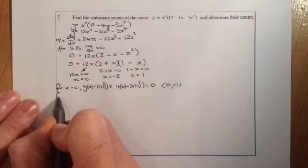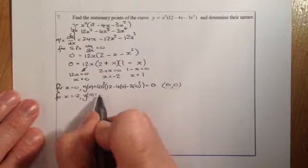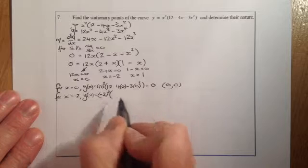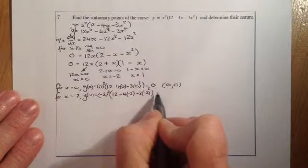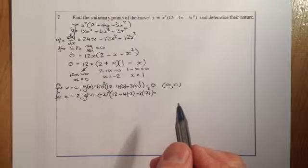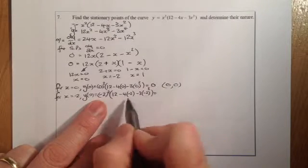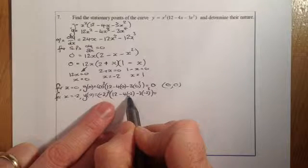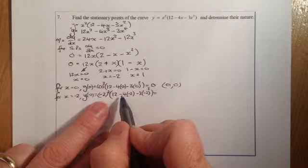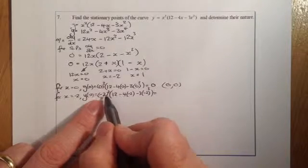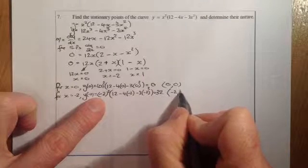For x equals minus 2: substituting in, y equals (minus 2) squared times (12 minus 4 times minus 2 minus 3 times minus 2 squared). That gives 4 times (12 plus 8 minus 12), which is 4 times 8, giving y equals 32. So the coordinate is (minus 2, 32).